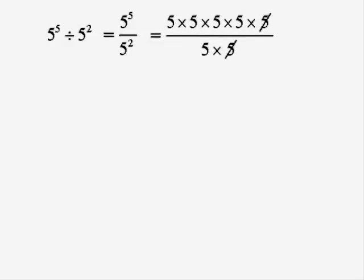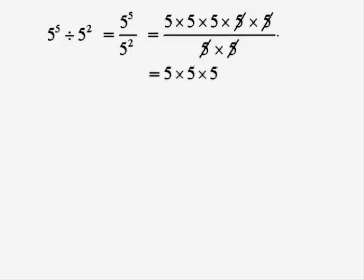We can cancel out a 5 top and bottom and another one. That just leaves us with 3 fives on the top and none on the bottom. But bearing in mind that we are cancelling down and we're just dividing top and bottom, so we're still left with 3 fives on the top and effectively 1 on the bottom, which we can get rid of.